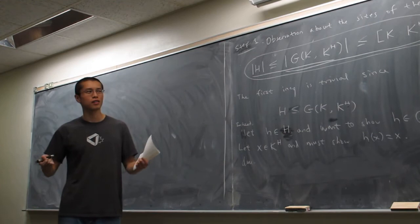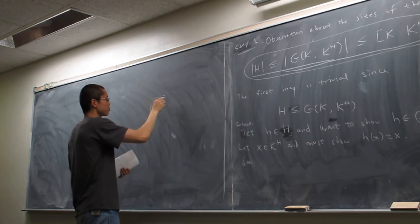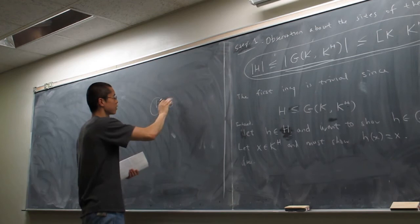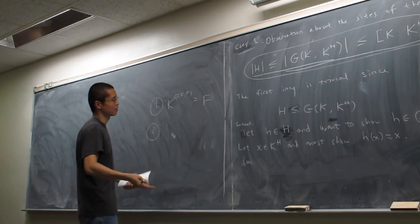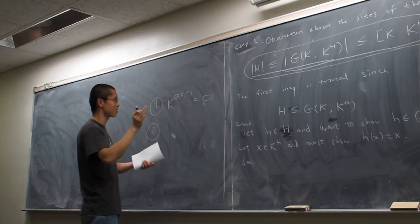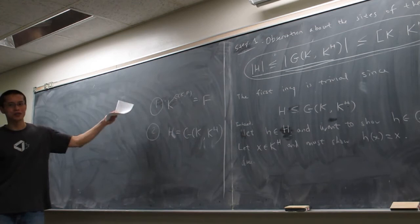Before I erase the statement of the corollary: it was K^(G(K/F)) = F, which was implied immediately by the top-to-bottom result. And H = G(K/K^H) has something to do with the symmetric polynomials and this argumentation. Item one follows from the top-to-bottom result, which is why it's important. So let's now prove the top-to-bottom result for the other half of this lecture.